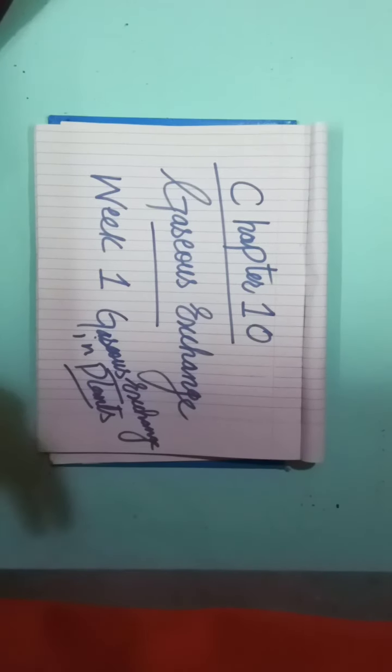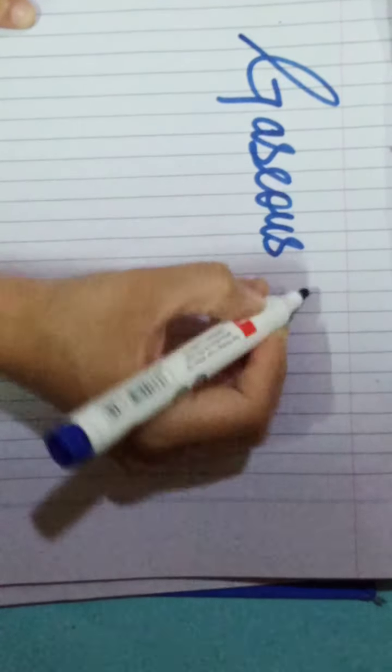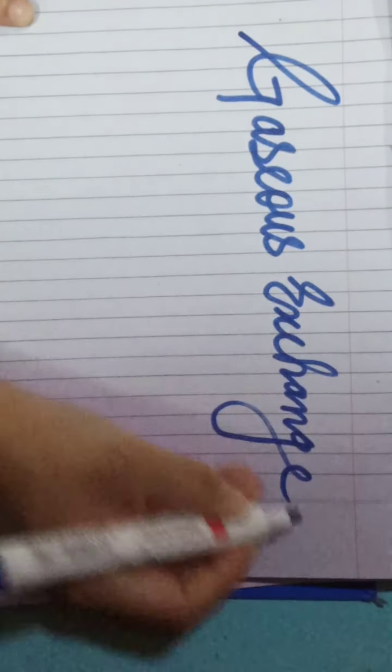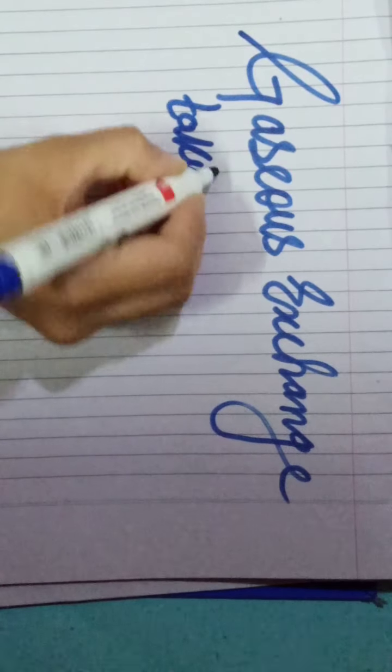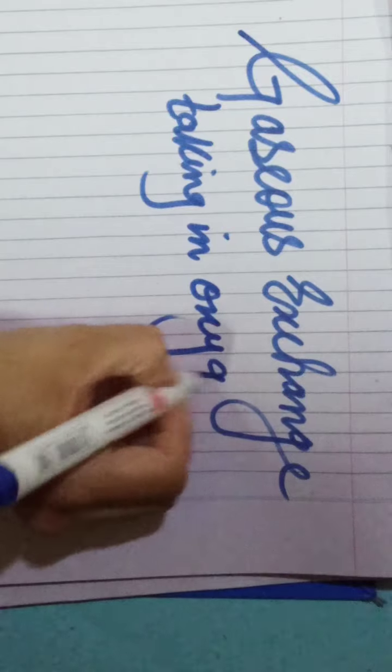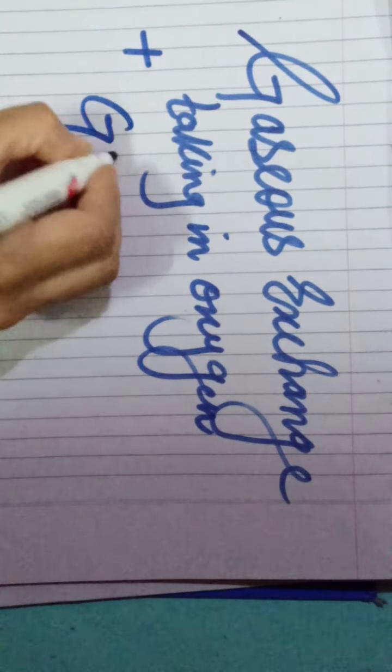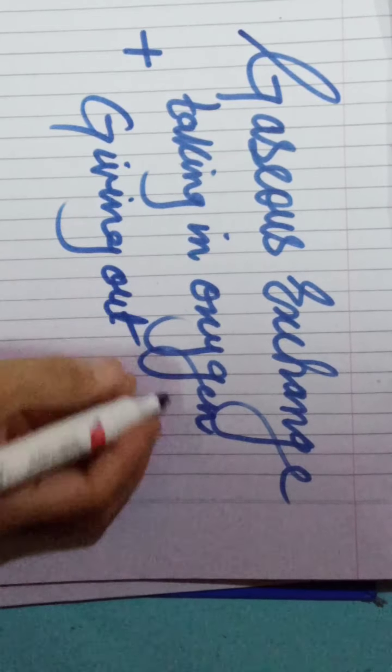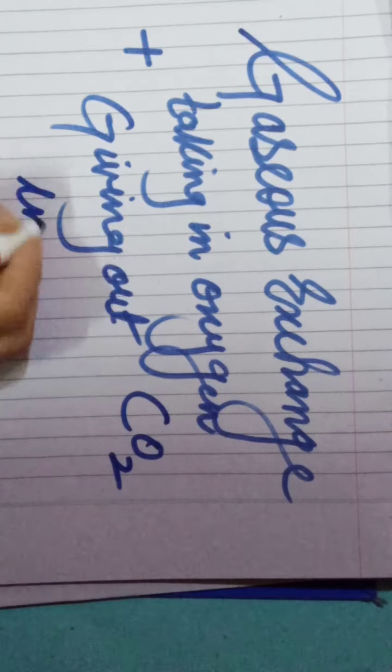Good morning everyone. Chapter 10: Gaseous Exchange, Week 1 — how does gaseous exchange take place in the plant? The first topic is what is gaseous exchange. Gaseous exchange means taking in oxygen and giving out carbon dioxide in air. This is the simple definition of gaseous exchange.